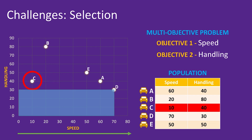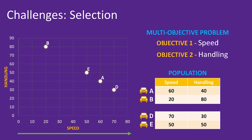Onto our final comparison, we can see solution D does not dominate solution C, but the same is true for the reverse — solution C does not dominate solution D. We refer to these two solutions as being non-dominated, because solution C has better handling than solution D, and solution D has better speed than solution C. However, because at least one solution dominates solution C, we can get rid of it from the population.